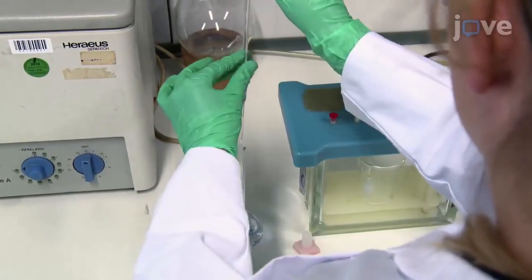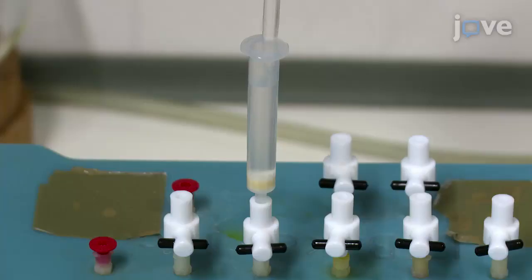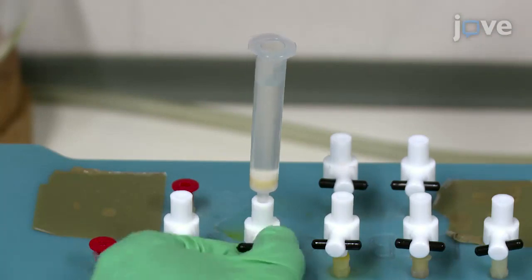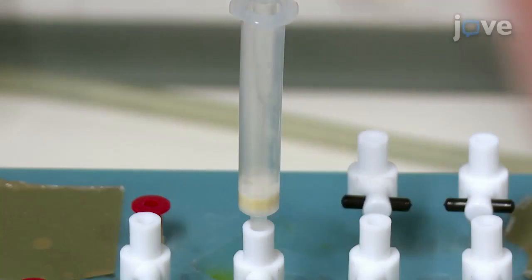Next, add three milliliters of methanol to the solid phase extraction cartridge to begin equilibrating it. Wait for the methanol to leave the cartridge and then add three milliliters of ultra-pure water.